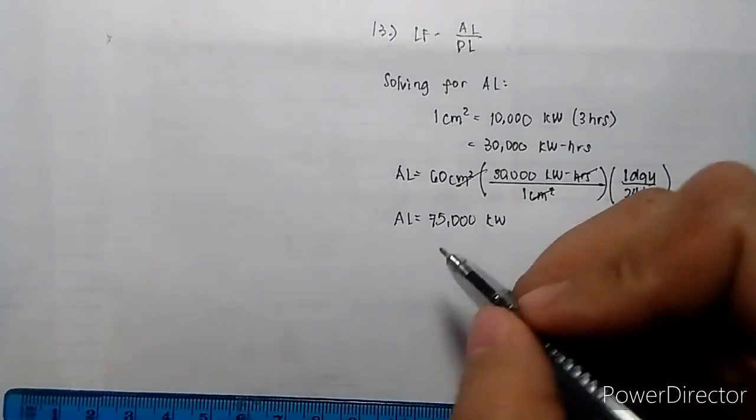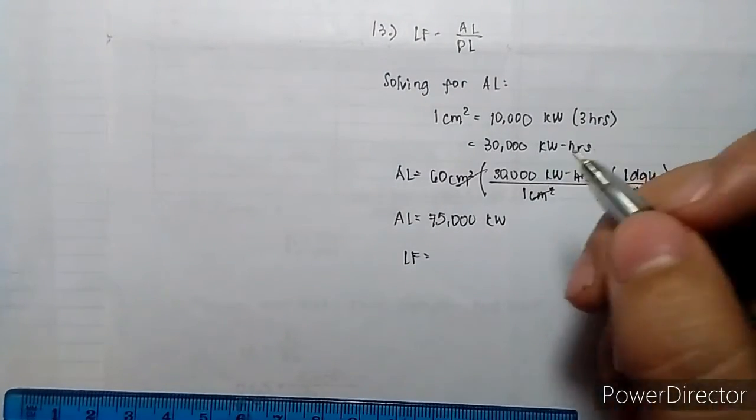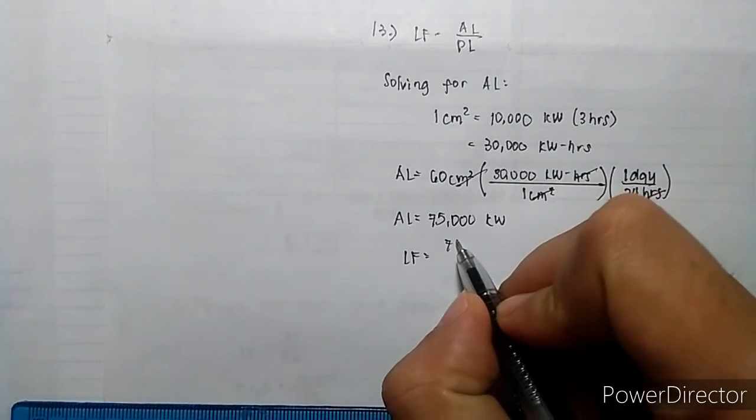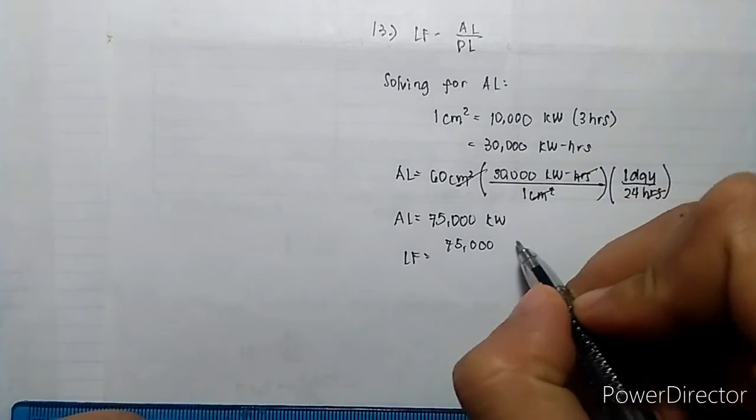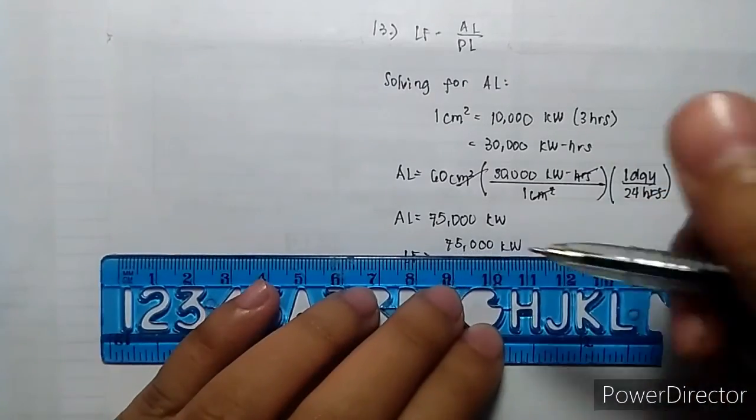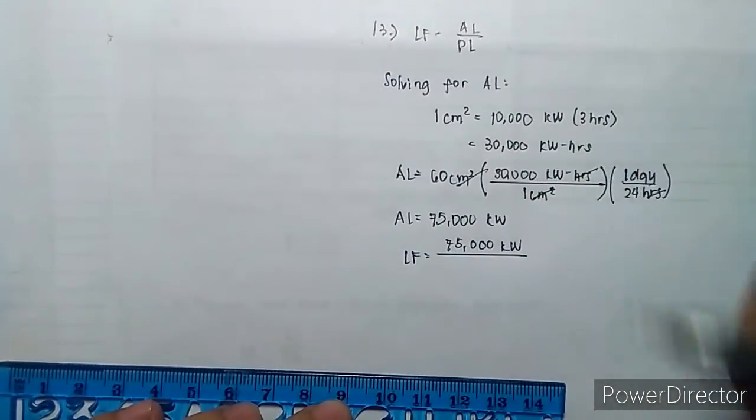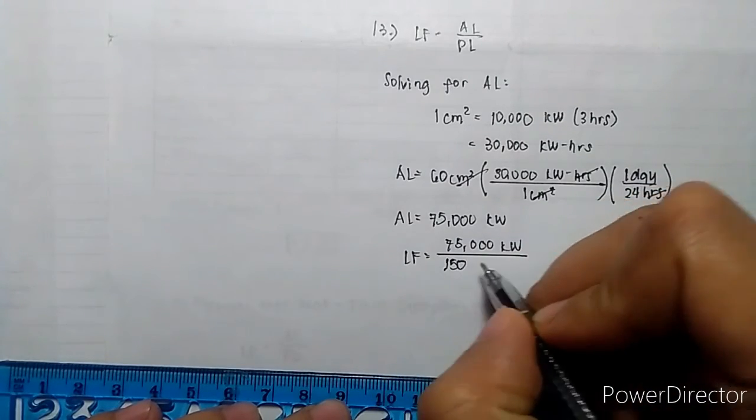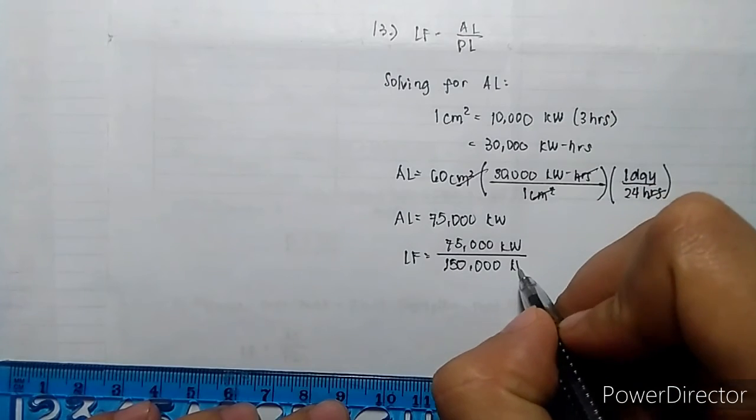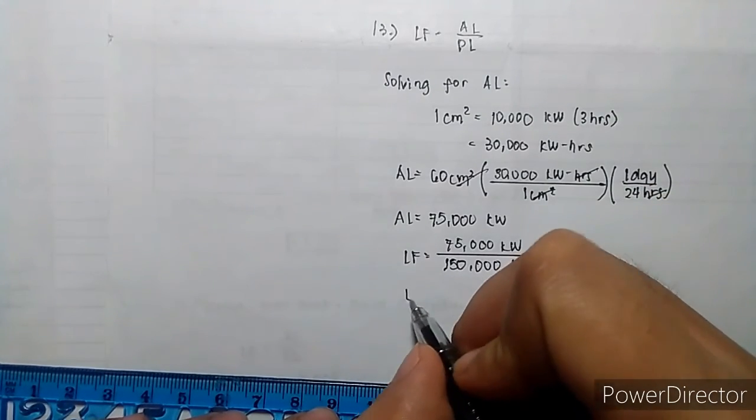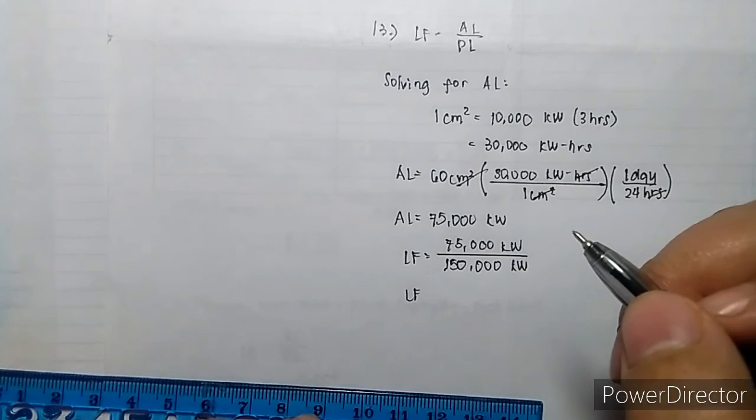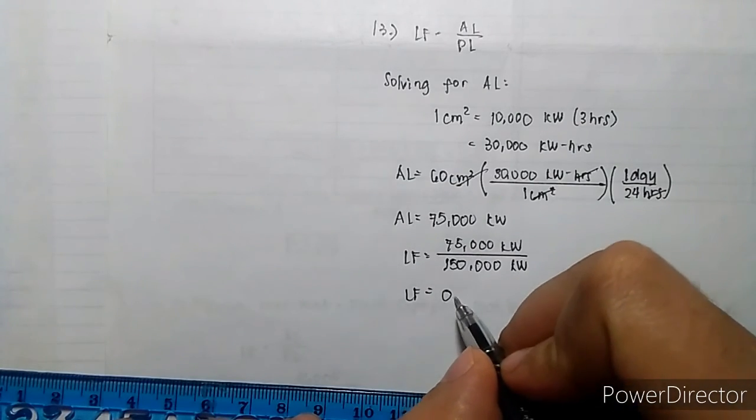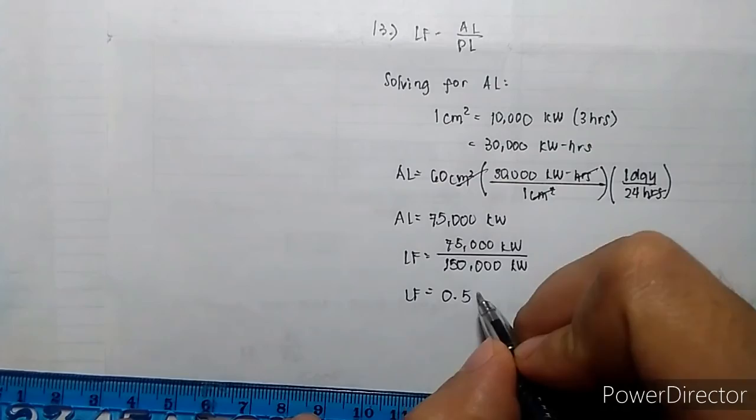Solving for the load factor is equal to the average load of 75,000 kilowatts over the peak load of 150,000 kilowatts. The load factor based on the 15 minute peak is equal to 0.50.